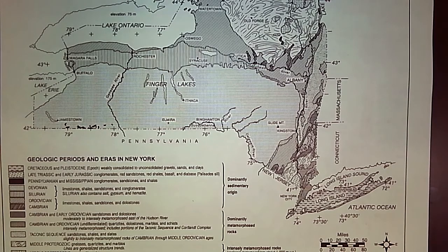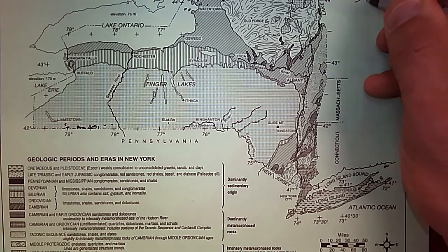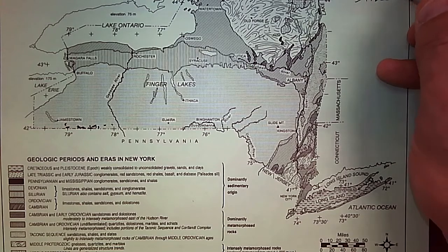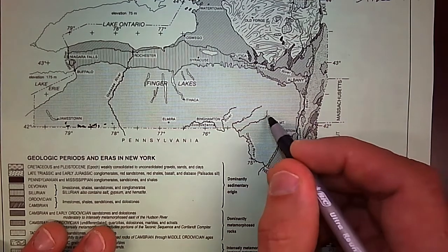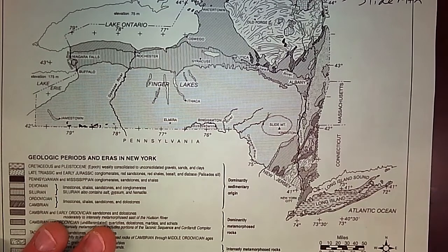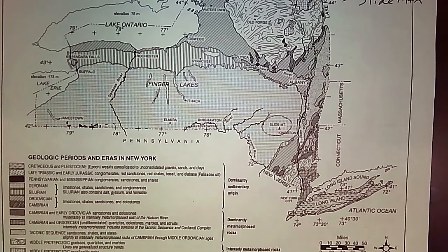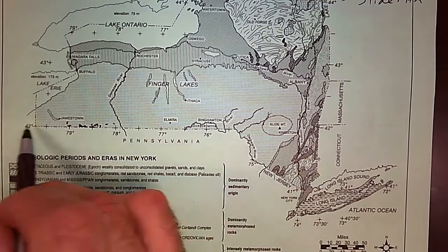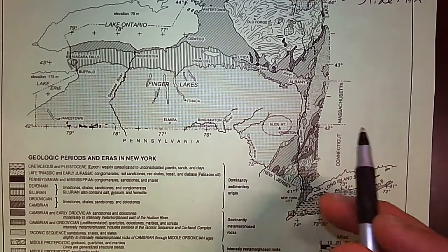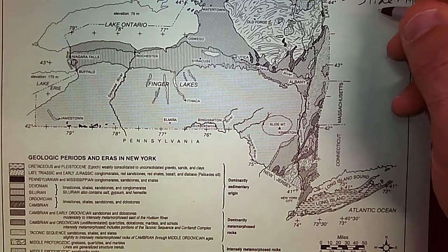The first point I want to do is Slide Mountain. If you look for Slide Mountain on there, it's just by Kingston, New York — it's pretty close. You'll see it right here on the map. The triangle is the point where it is located exactly. If you draw a line across, here's the 42 line, so it looks like it's pretty much on 42 degrees north.